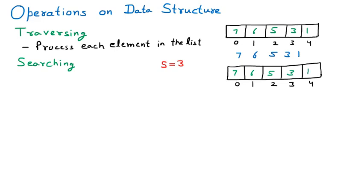Now, to search for the element three in this array, we compare it with each element one by one. We compare with the first element seven — not matching. Second — not matching. Third — not matching. Fourth — yes, our search element matches here. So the index value or place is returned. The program returns that at index three our element is found. It is at place four, since index value is one less than the place number. This is called searching — finding any element inside a list.